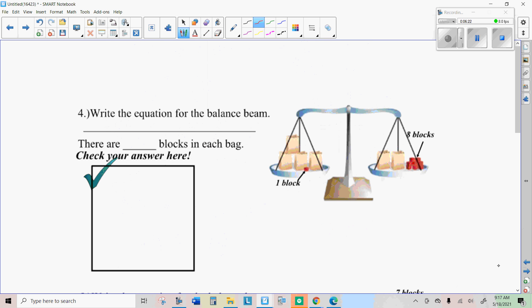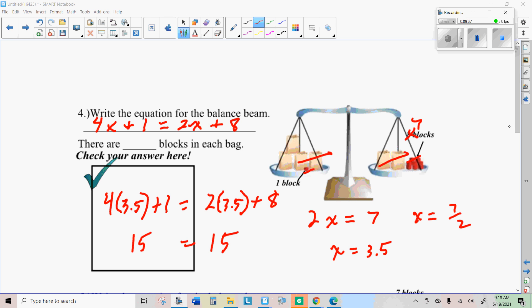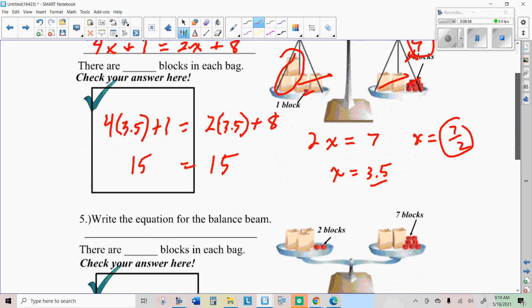All right, so this equation would be 4x plus 1 on the left side equals 2x plus 8 on the right side. See if you can figure out how many blocks in a bag there. You probably notice that these bags have to have half blocks because you end up with two bags right here left after you cross out 2 and 7 blocks over here. So that means you have 7 divided by 2 or 3 1/2 blocks per bag. That checks out.